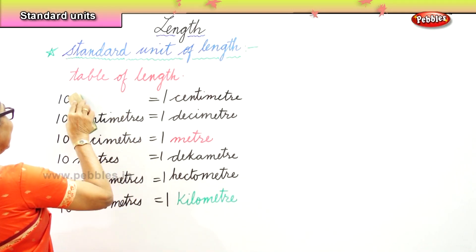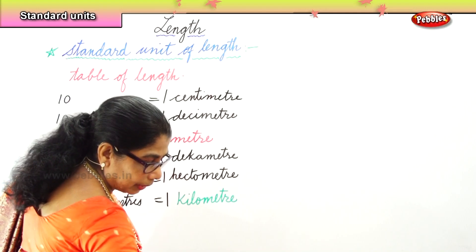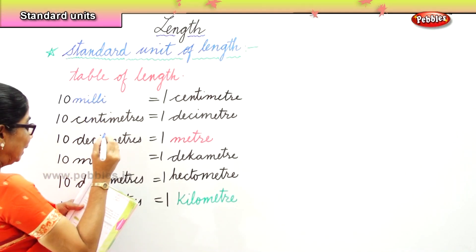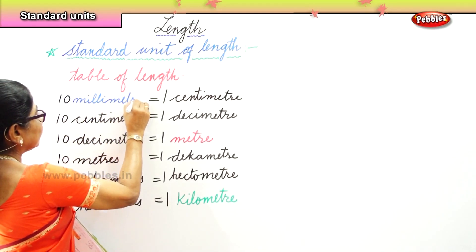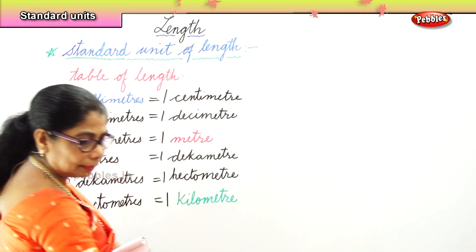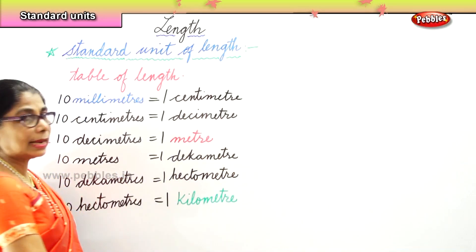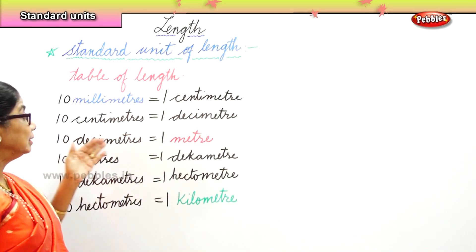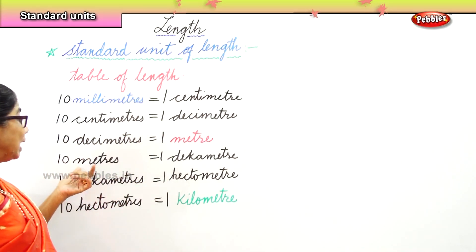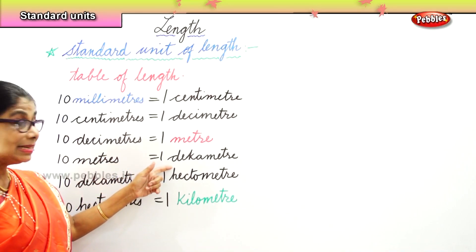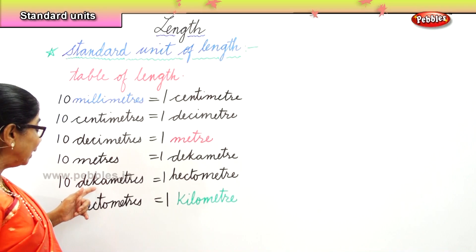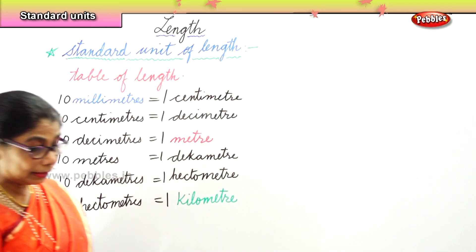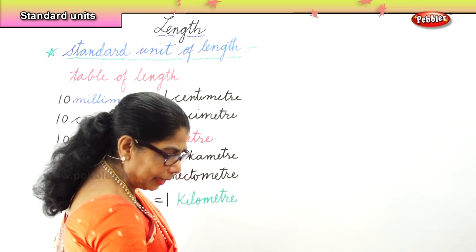So to recap: ten millimeters — the smallest measuring unit — is equal to one centimeter. Ten centimeters is equal to one decimeter. Ten decimeters is equal to one meter. Ten meters makes one decameter. Ten decameters makes one hectometer. And ten hectometers makes one kilometer.